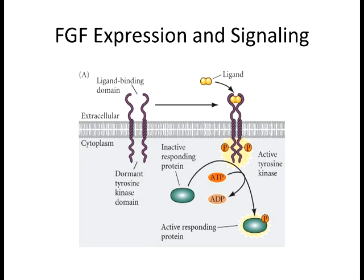FGF, or fibroblast growth factor signaling, is a big one with many factors. FGF is the ligand and the receptors are called FGFR, fibroblast growth factor receptors. There are different varieties of both FGFs and FGFRs. Mostly what FGF signaling involves is phosphorylation—a subgroup of this is receptor tyrosine kinase signaling, or RTK signaling. You get phosphorylation events in the presence of the ligand and receptor.